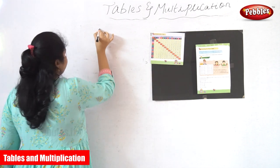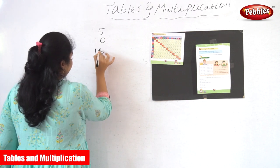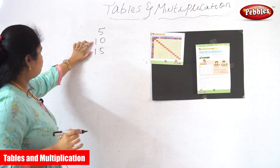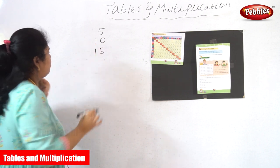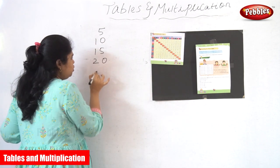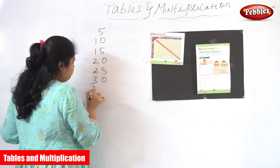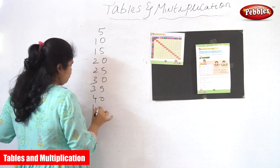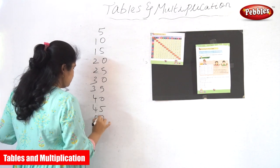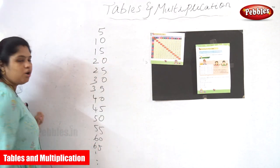So now we are going to see how the 5 tables actually work. See here: 5, 10, 15. In the 1st series itself, 0 and 5. Next, 2nd series: 0 and 5. Next, 3rd series: 0 and 5. Next, 4th series: 0 and 5. Next, 5th series: 0 and 5. Next, 6th series: 6 and 5. So this will keep on going.